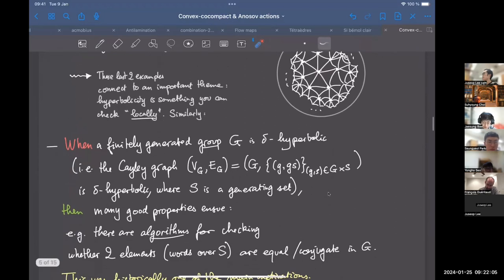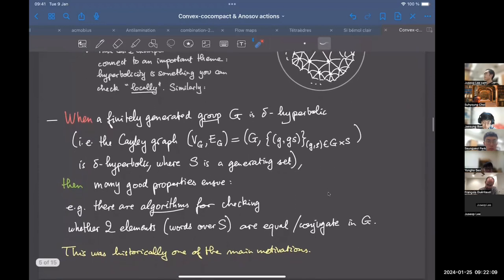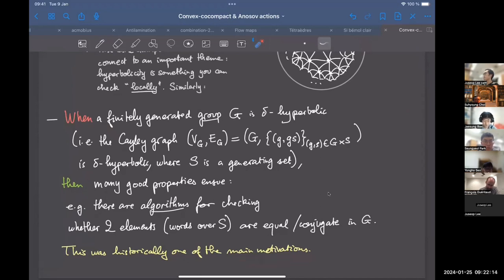And that will be a common theme, a recurring theme, checking things locally in this series of results. So I want to mention the following important results that were historically a big motivation. If you have a finitely generated group G, and it's delta hyperbolic, then many good properties should follow. So what does it mean to be delta hyperbolic for a group? Well, I need to construct a space for this group. So the space will be just the graph, the Cayley graph (V_G, E_G), V vertex set, E edge set. The vertex set is just G. There's one point for every element of G. And the edge set is just that you connect G with GS, when S is a generator.